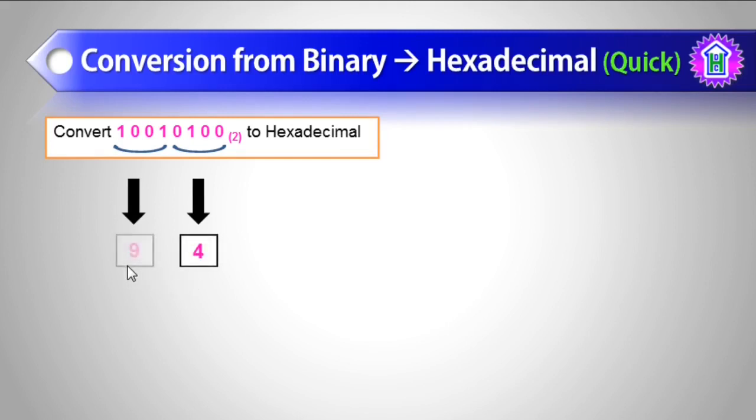And they are directly converted as 4 and 9, as if you remember the table, 0100 is 4 and 1001 is 9. So the hexadecimal equivalent of 10010100 will be 94.